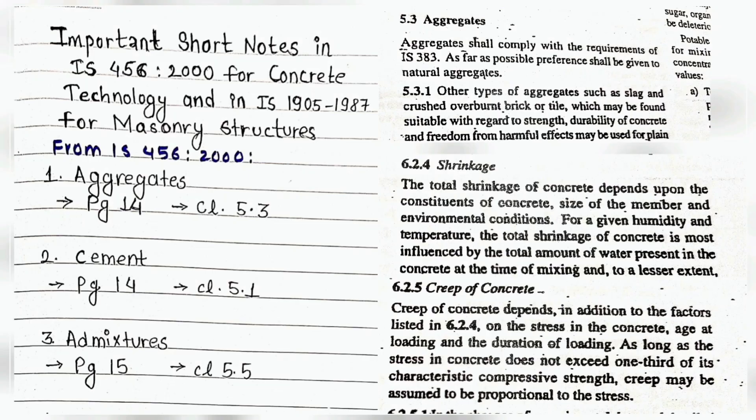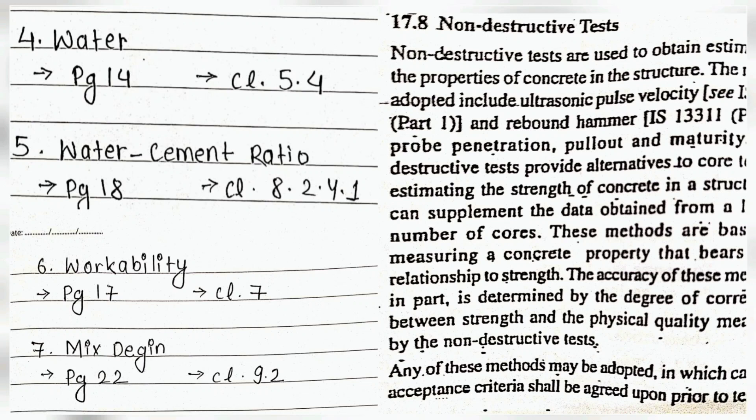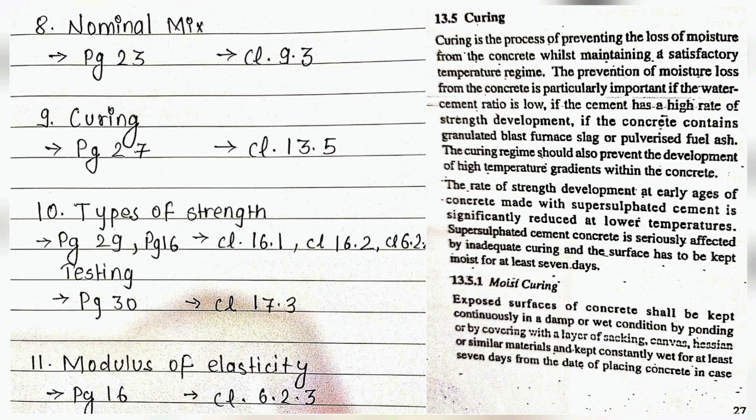For concrete technology from IS 456-2000, the topics listed are: aggregate in clause 5.3, cement in 5.1, mixture in 5.5, water in 5.4, water-cement ratio in 8.2.4.1, workability in clause 7, mix design in 9.2, and nominal mix in 9.3.